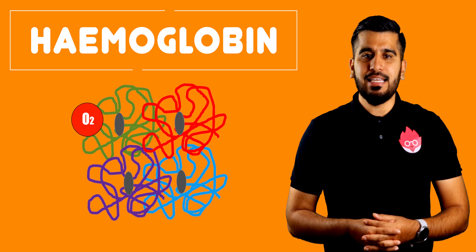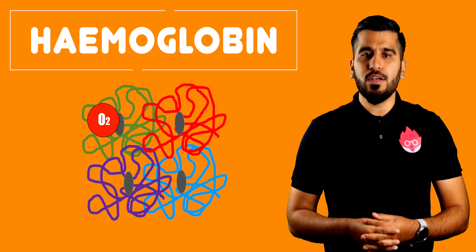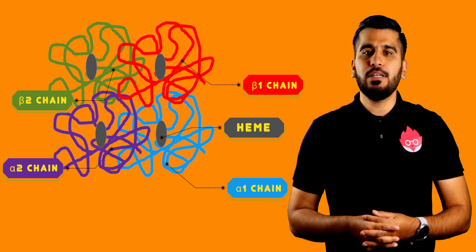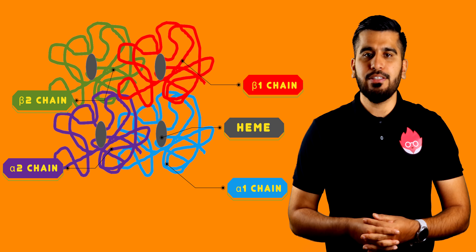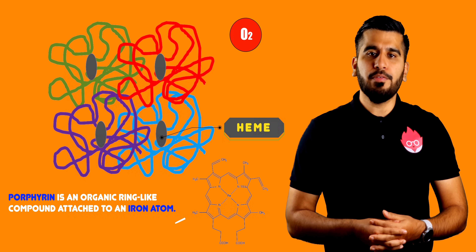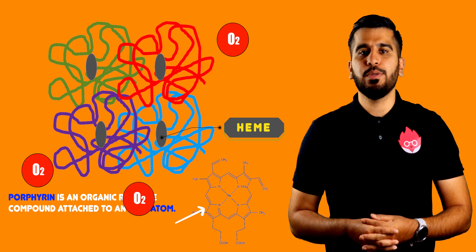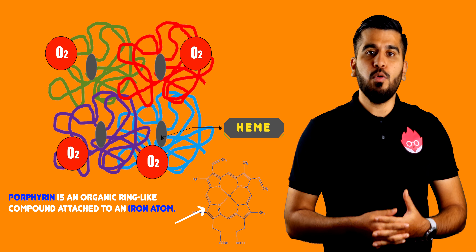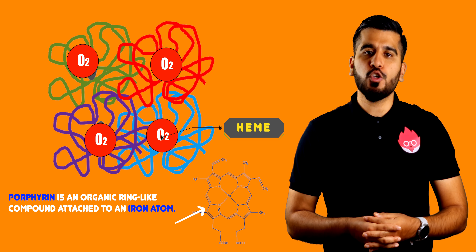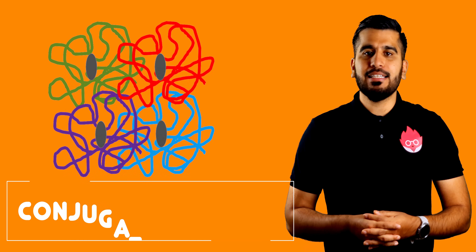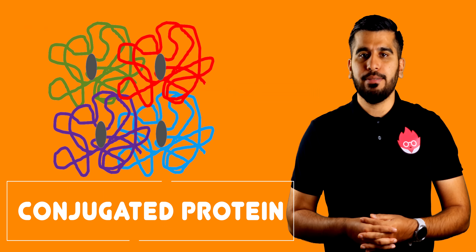Haemoglobin plays an important role in the transport of oxygen. In the oxygenated state, it is called oxyhaemoglobin and is bright red. Made up of four polypeptide chains, each chain has a heme group composed of a porphyrin attached to an iron atom. Each iron-porphyrin complex allows one oxygen molecule to bind reversibly. Haemoglobin is an example of a conjugated protein.